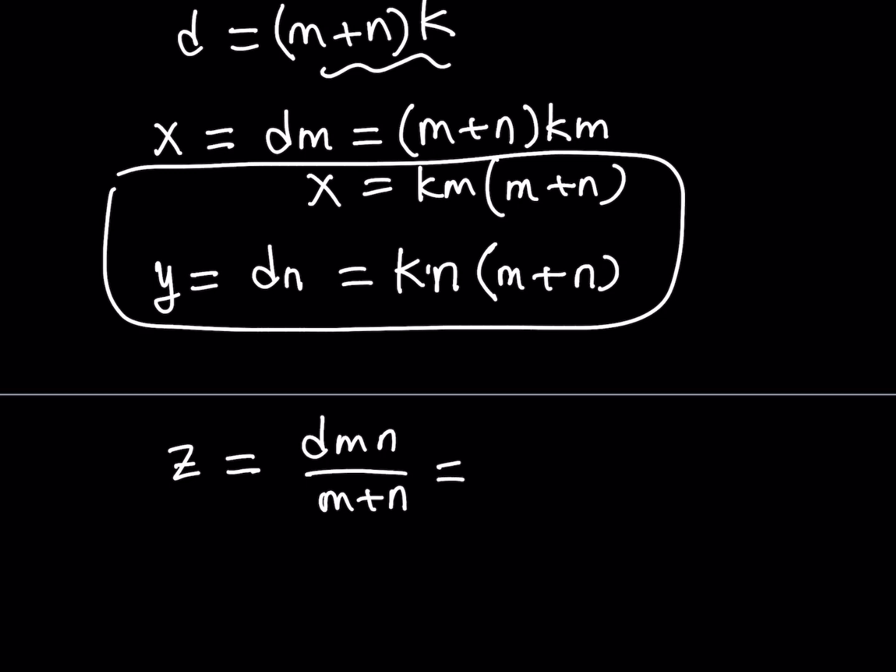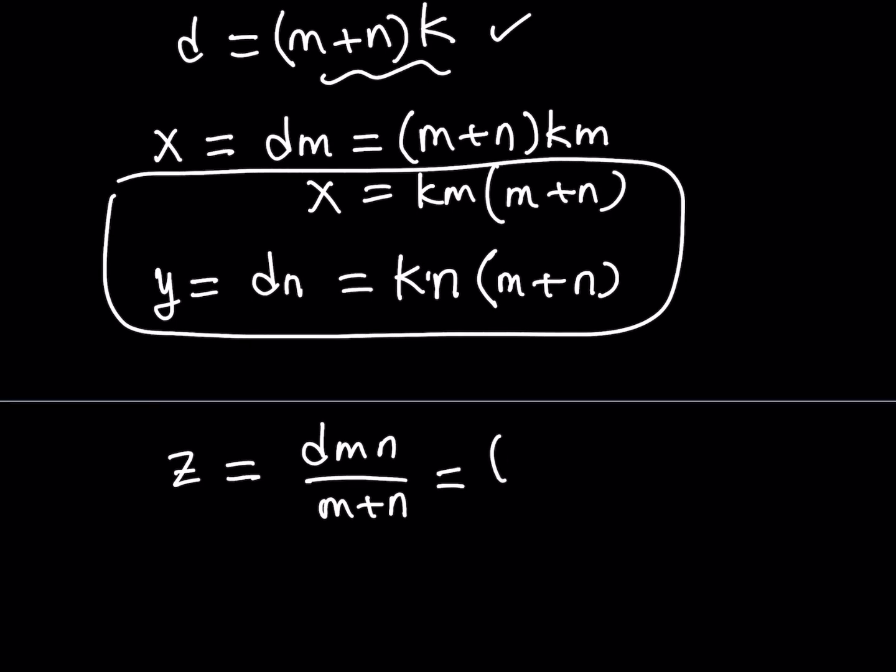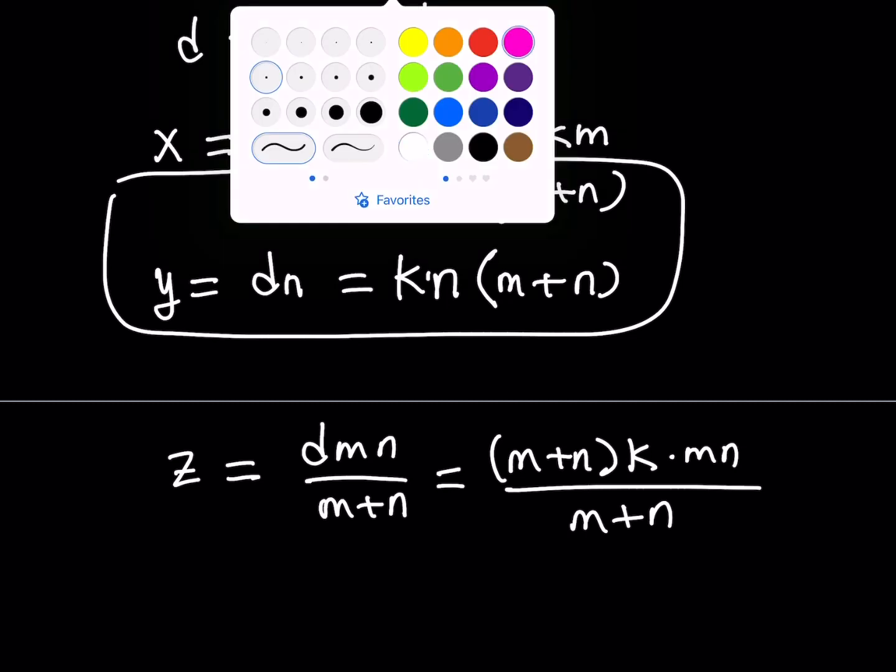So, if you go ahead and replace d with what it is from here. So, you can just write m plus n times k for d. And then multiply that by mn and then divide it by m plus n. And what is that going to give you?